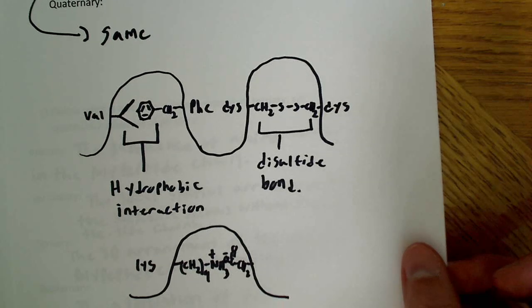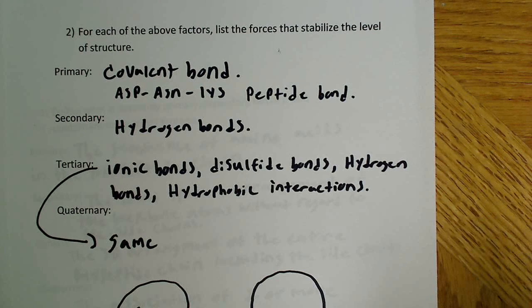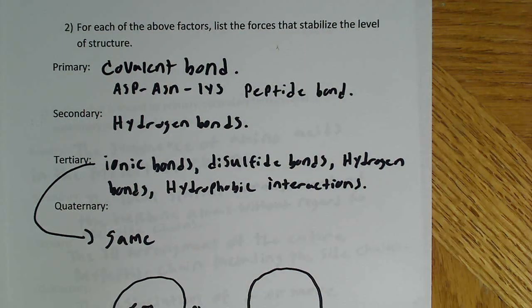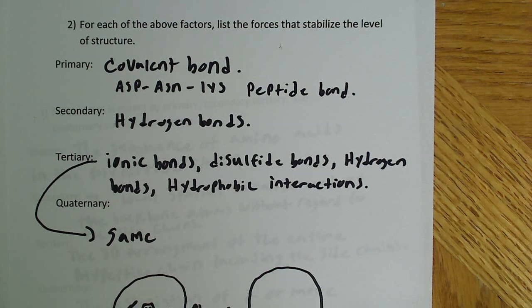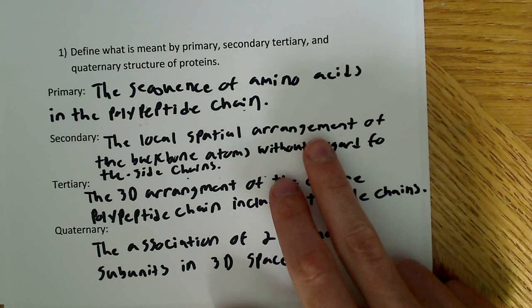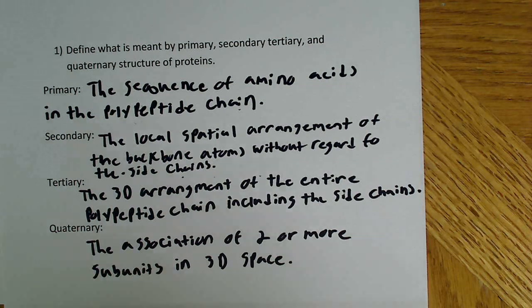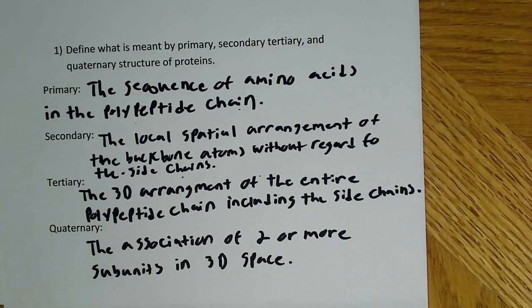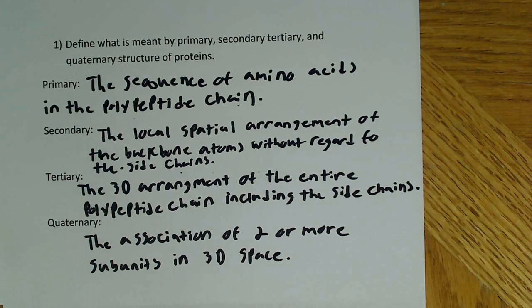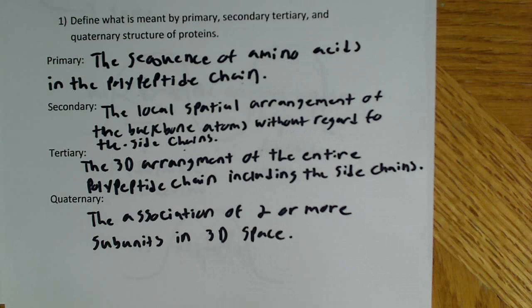So those are the forces stabilizing each level: covalent bonds for the primary structure; hydrogen bonding between backbone atoms for the secondary structure; ionic bonds, disulfide bonds, hydrogen bonds, and hydrophobic interactions for the tertiary structure; and the same forces for the quaternary structure. In terms of definitions: primary is the sequence of amino acids; secondary is the local spatial arrangement of backbone atoms without regard for side chains; tertiary is the three-dimensional arrangement of the entire polypeptide including side chains; and quaternary is the association of two or more subunits in three-dimensional space.